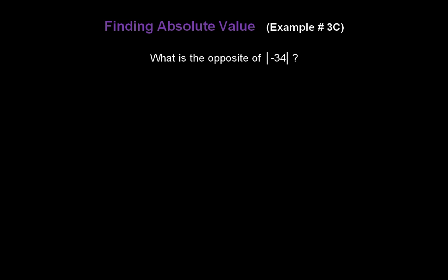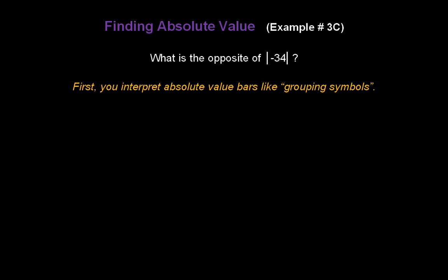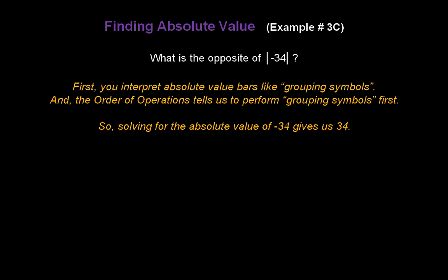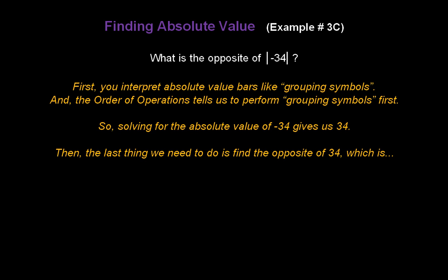How about this question? What's the opposite of the absolute value of negative 34? Well, first you have to interpret absolute value bars like grouping symbols, and the order of operations tells us to perform grouping symbols first. So, solve for the absolute value of negative 34 — that gives us positive 34. Then, the last thing we need to do is find the opposite of 34, which is negative 34.